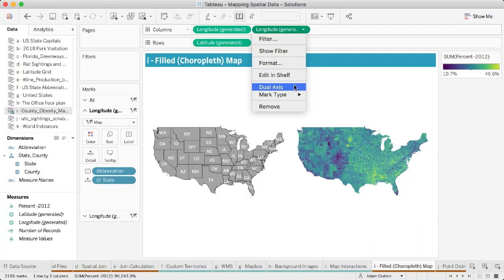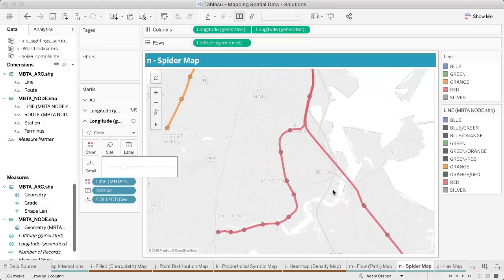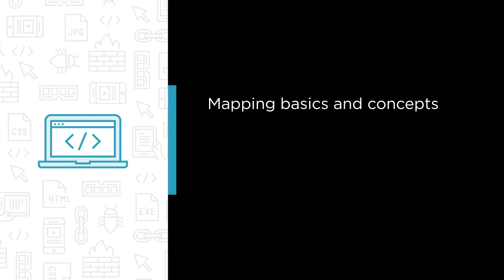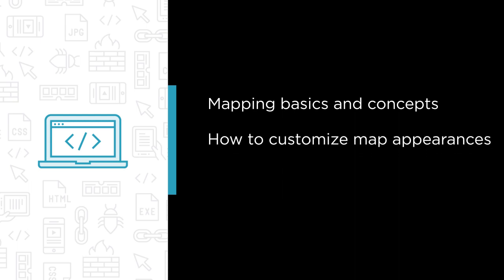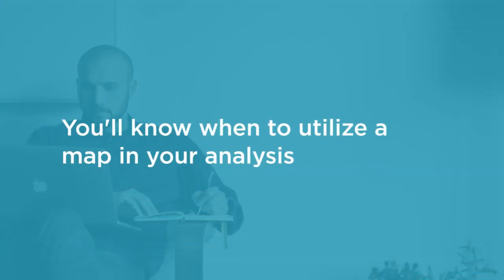In this course you will learn how to navigate answering spatial questions and almost everything there is to know about maps in Tableau Desktop. Some of the major topics we will cover include mapping basics and concepts like understanding Tableau's geographic roles, how to customize map appearances through map styles, layers, and services, and we will build almost every map type possible in Tableau. By the end of this course you will know when to utilize a map in your analysis, how to choose the correct map for the job, and how to style your map to balance beauty and functionality.